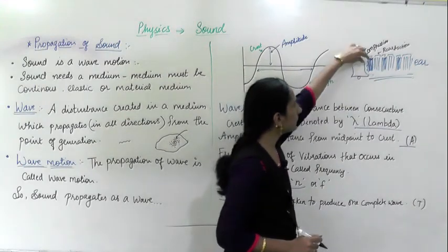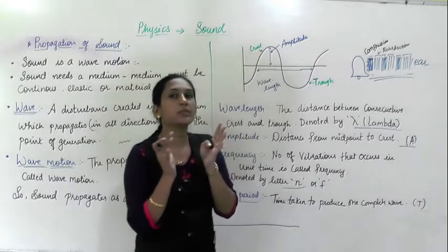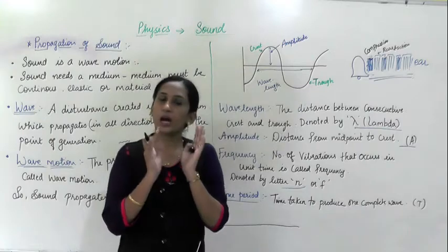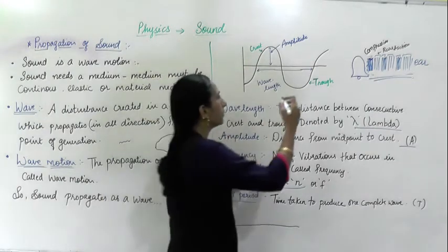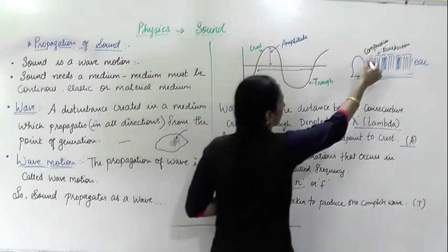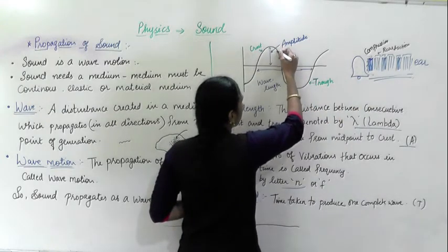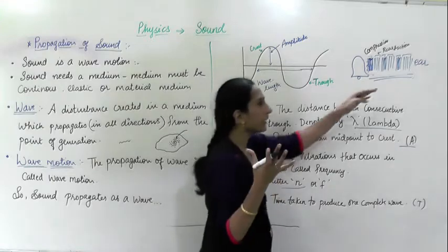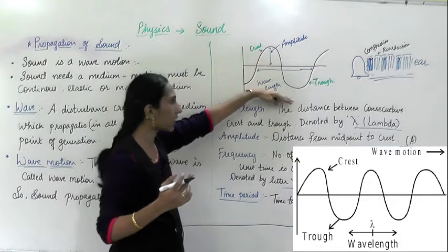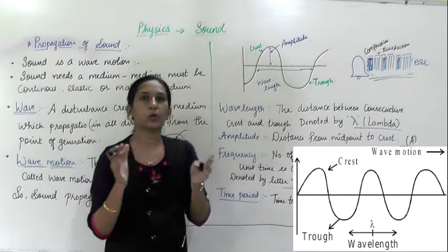The compressed part is where air molecules come together — that is the high density part. For high density, the graph goes up. Then it decreases and becomes low — that is the rarefaction — so the graph comes down. I am drawing a graph of compression and rarefaction here. For compression, air particles are compressed, density is high, so the graph increases. Then the density decreases at rarefaction, so the graph goes downward.